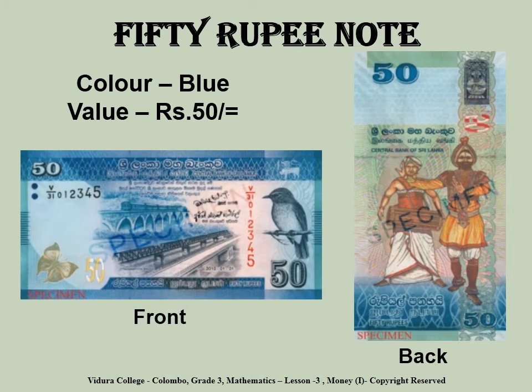Now children, tell me what this note is? It is the 50 rupee note. As you can see, it has a nice blue color and the value of the note is 50 rupees. On the front side of the note, you will see the newly constructed bridge in Manampitiya. The formerly used bridge, over which both trains and other vehicles ran, appears to the left of the new bridge. Above both is the faint visualization of a historical railway arch bridge. The bird that appears on the right side of the note is known as the Sri Lankan Dull Blue Flycatcher. The butterfly that appears on the left is known as the Blue Oak Leaf.